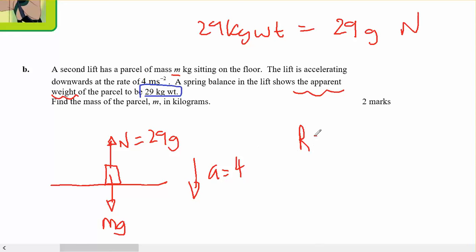The resultant force in the direction of motion will be down, so it's going to be M G minus anything in the opposite direction, which is 29 G. Mass times acceleration: 4 M equals M G minus 29 G.